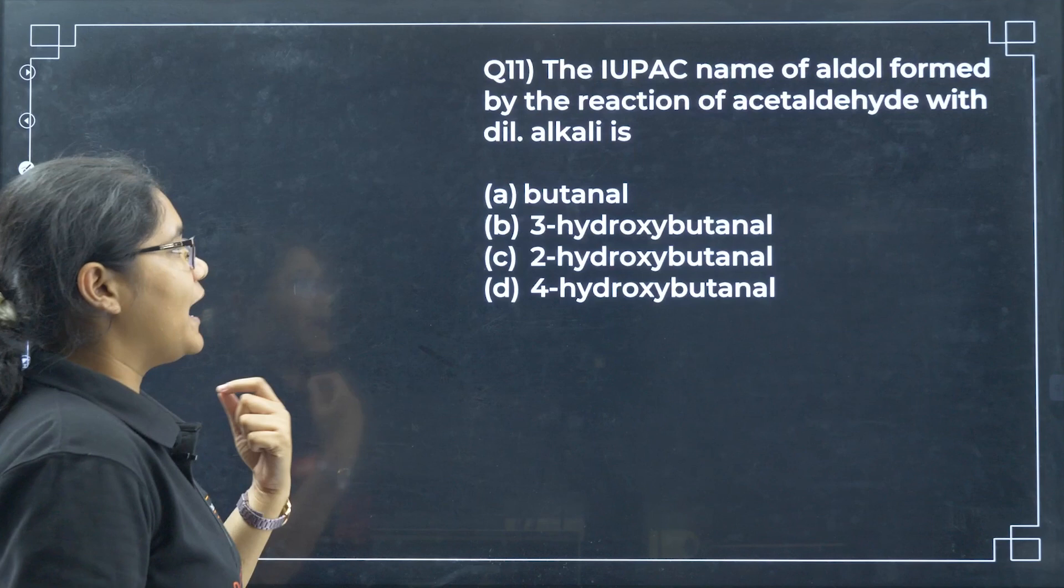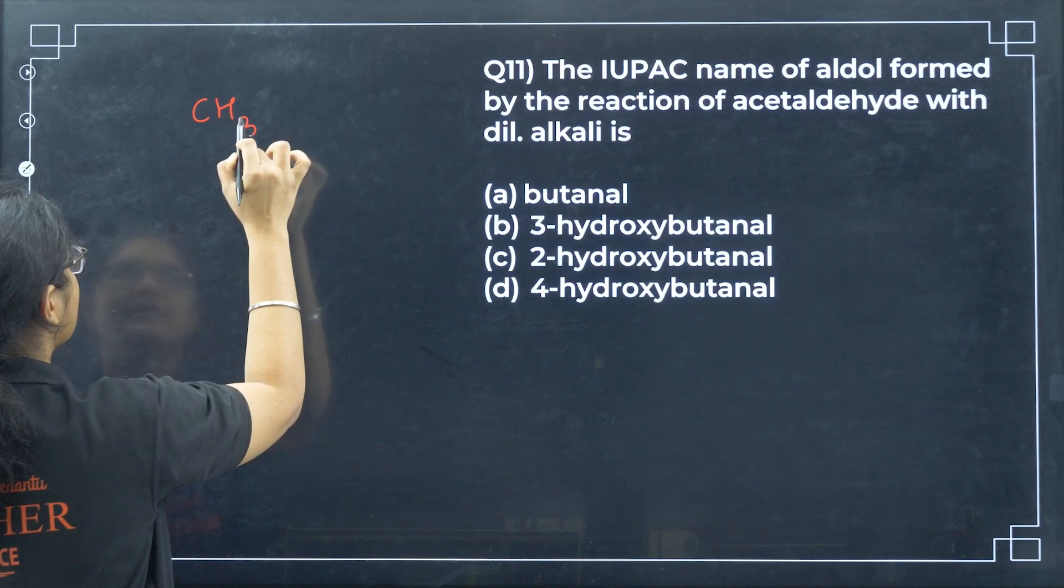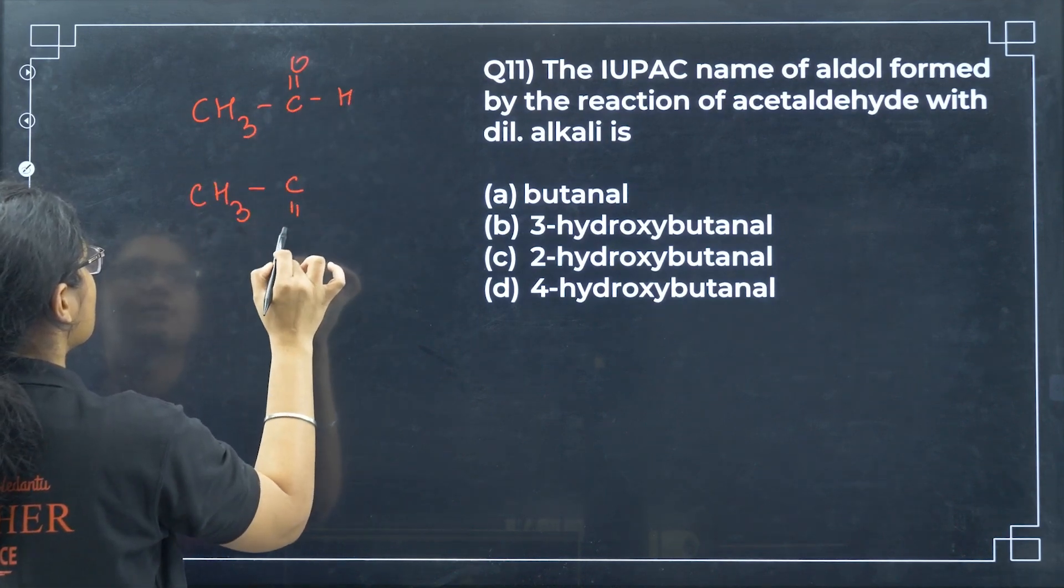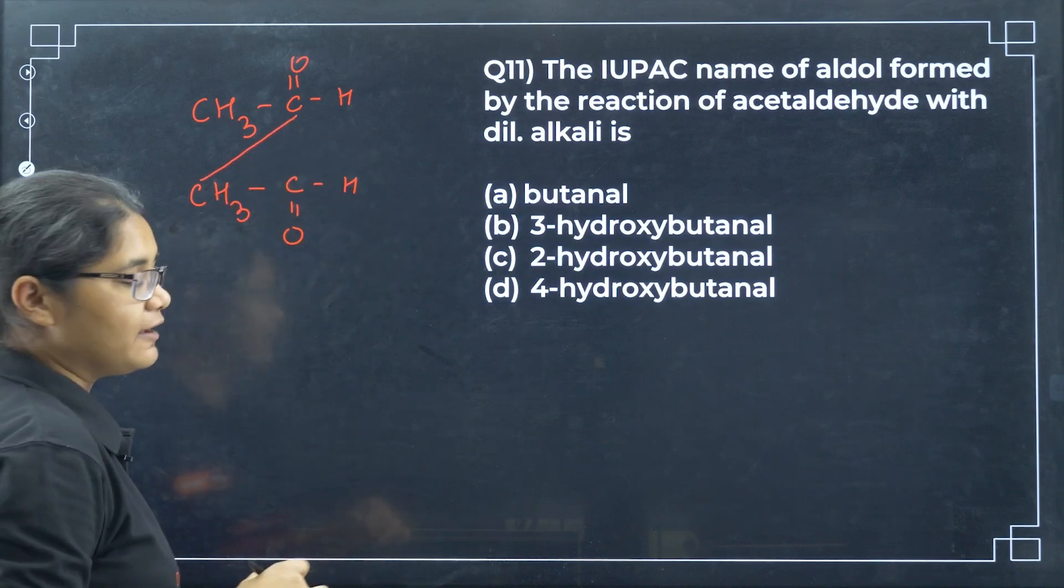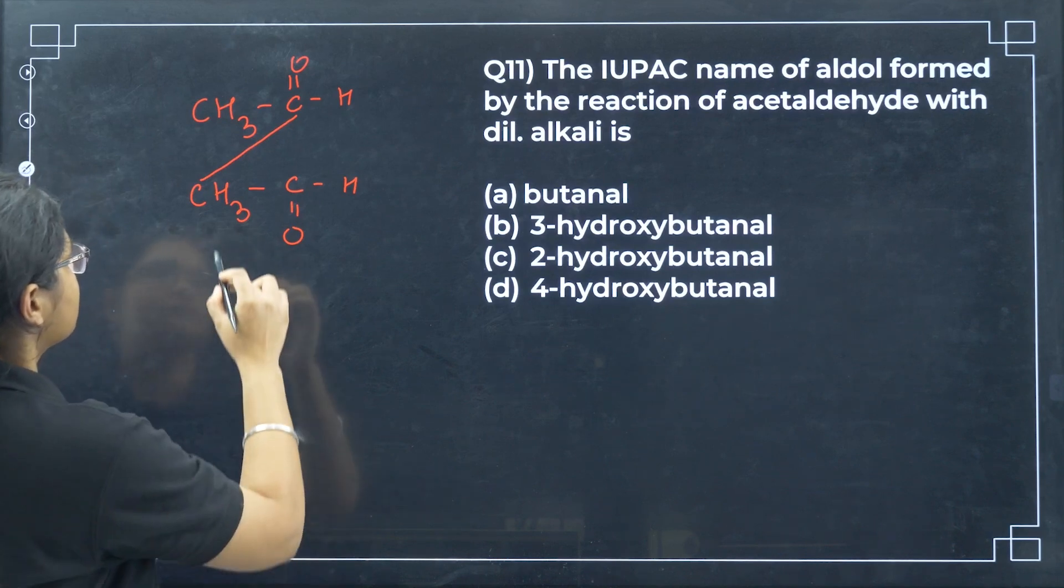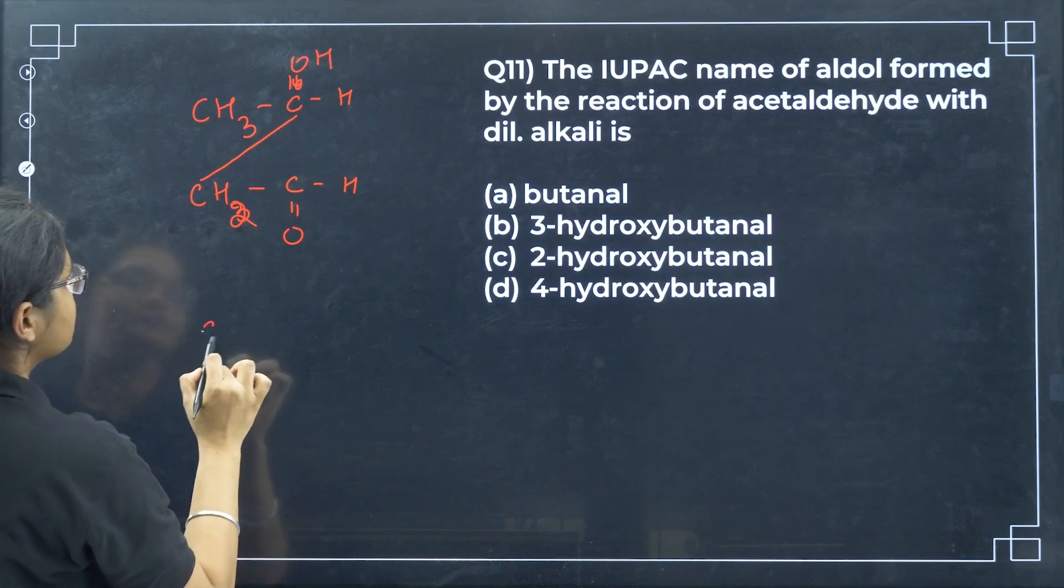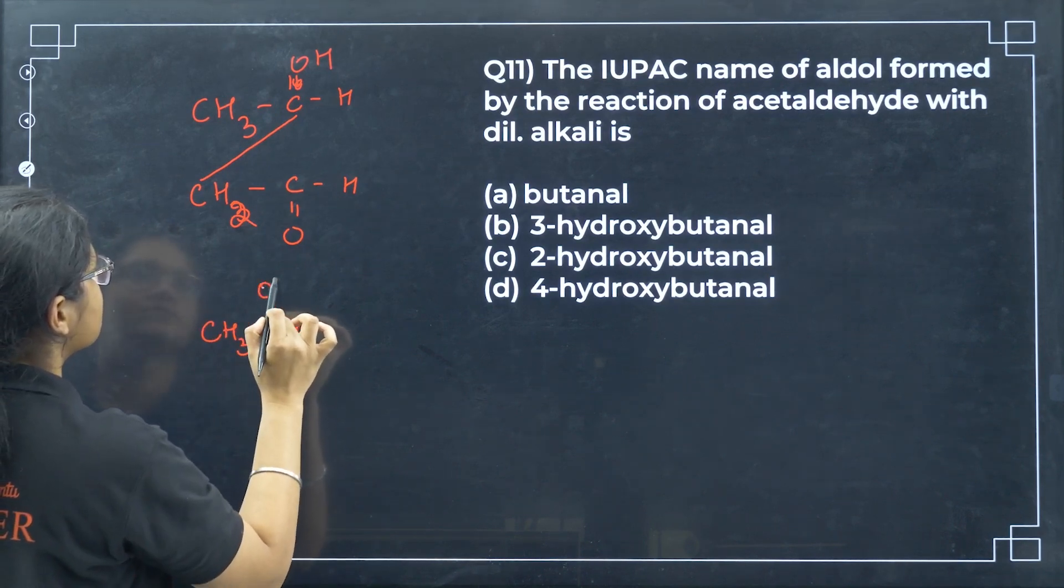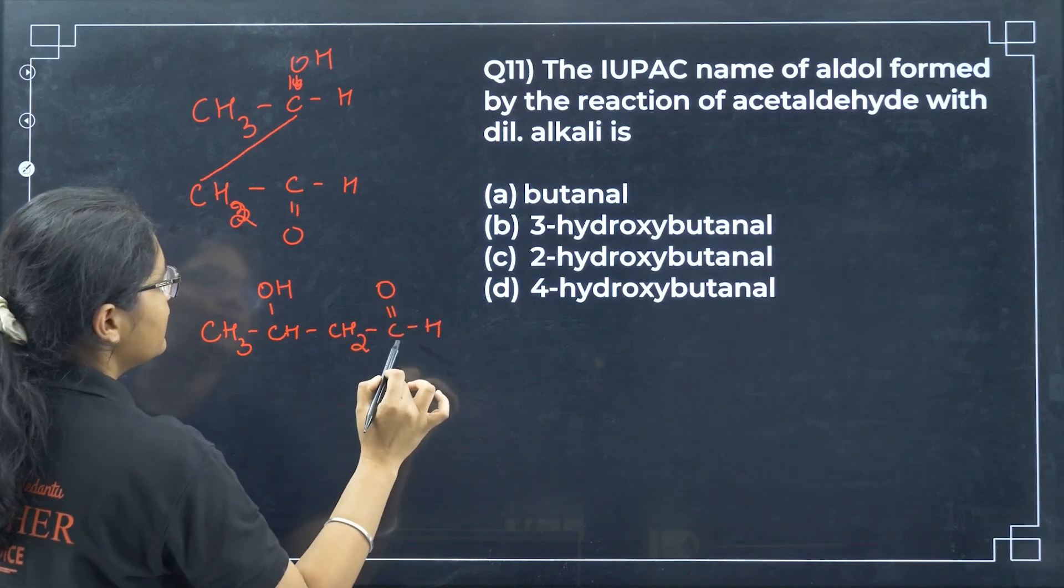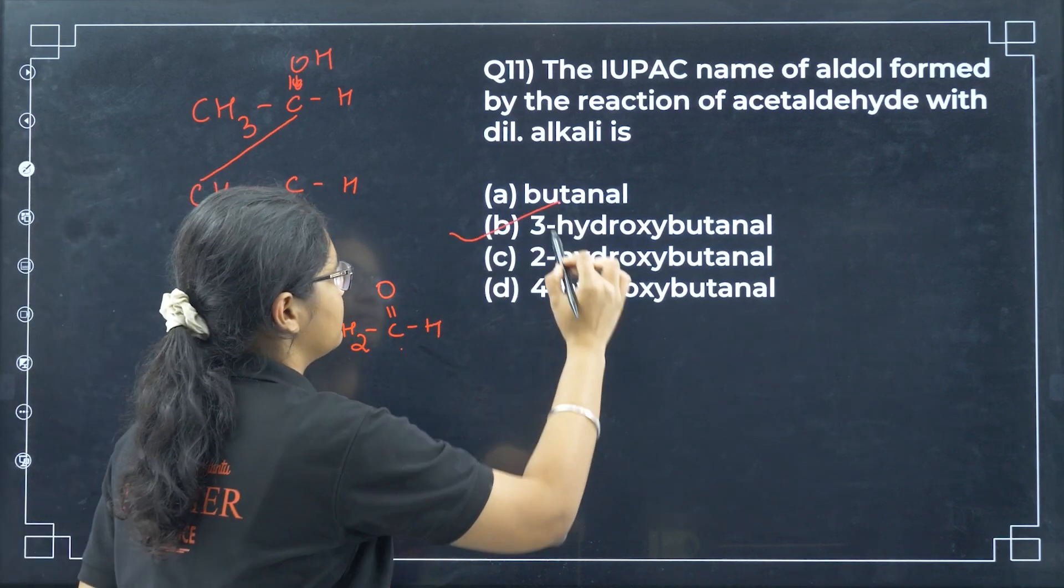Next, the order of reactivity of acetone, acetaldehyde, and benzophenone with Grignard reagent. Definitely aldehydes are more reactive, so 2 will be highest. We can eliminate these two options. Now benzophenone means two-side benzene rings and acetone has CH3CH3 on two sides. So that is less steric. After 2, it will be 1, then 3. Option C here.